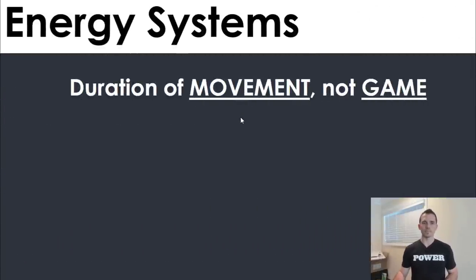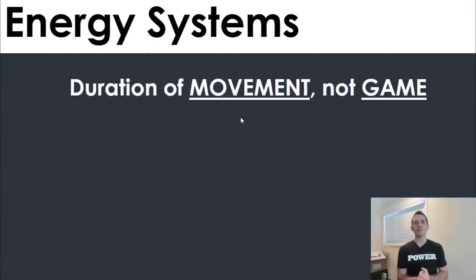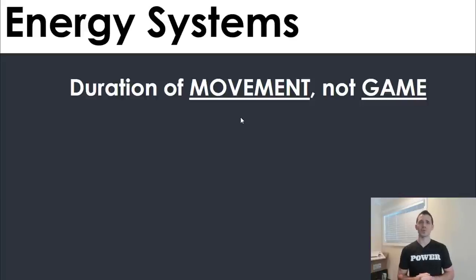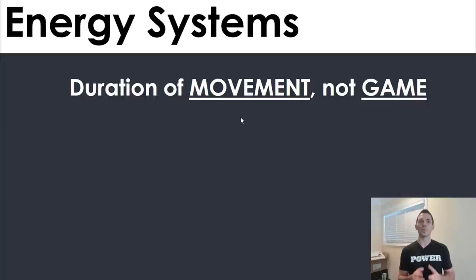Let's jump into them one by one. From the sport perspective, number one is energy systems. A common mistake people make — and I'd argue having a little exercise physiology knowledge about energy systems can sometimes do coaches worse than good — is they confuse the movement with the duration of the game. You have a soccer player who plays a 45-minute half; don't look up what the energy systems are for a 45-minute workout, because that's not actually what they're doing.